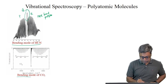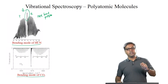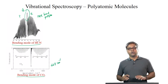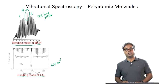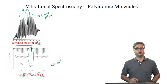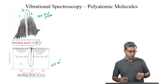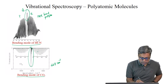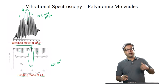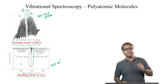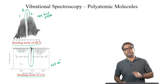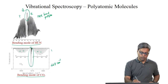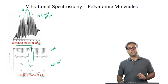Looking at the spectrum of the bending mode of carbon dioxide, this vibrational band is centered at 667 cm⁻¹. Apart from the P and R branches, there is an intense Q branch where all the lines overlap with one another. The lines of the P and R branches are separated, while all Q branch lines are on top of each other, making the Q branch very intense. This is a PQR band profile, implying a perpendicular band.